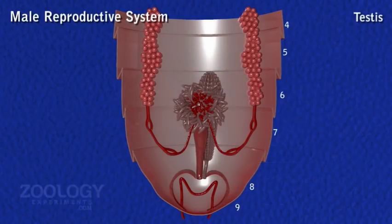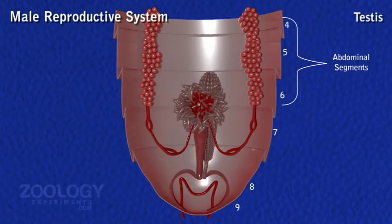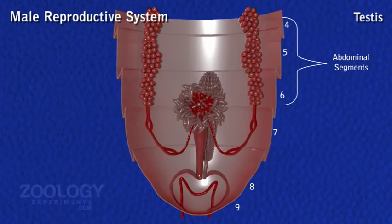Testes. Male reproductive organs include a pair of testes lying embedded in fat body, one on either dorsal lateral side of the fourth and sixth abdominal segments. Each testis is three-lobed and consists of about 30 to 40 small whitish transparent follicles arranged in a longitudinal series around a narrow vas deferens, into which they discharge sperms.